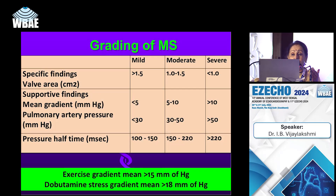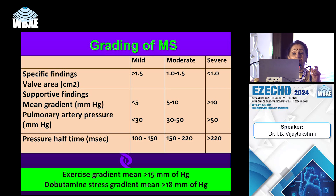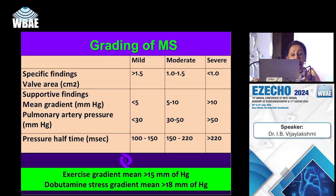Gradient classification — mild, moderate, severe — depends on valve area, gradient, pressure half time, and multiple parameters. You have to use multiple parameters and take the average. Exercise gradient of more than 15 mmHg or dobutamine test gradient of more than 18 mmHg are very significant and require intervention.